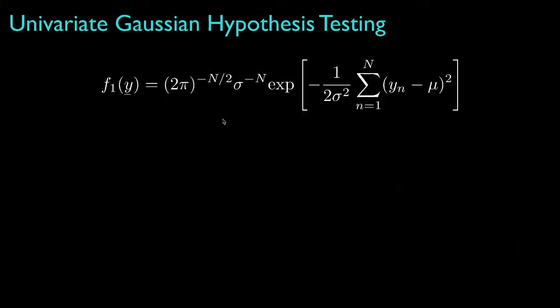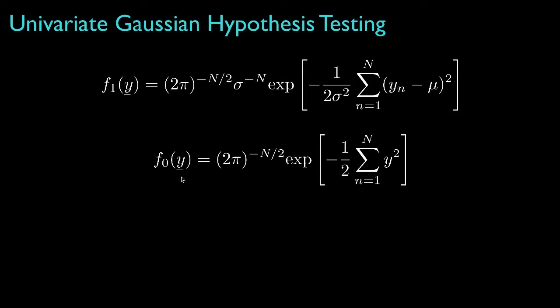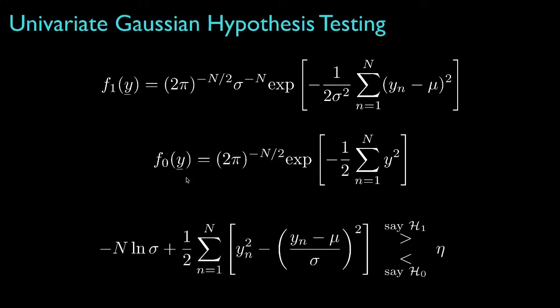Accordingly, the probability density for the observations under hypothesis 1 is the product of N densities with mean mu and standard deviation sigma, and the density under hypothesis 0 is the product of N standard normal distributions. Using those densities, the log likelihood ratio test would look like this, where the decision threshold eta might be defined by the Bayes costs and priors, or could be selected to specify a particular false alarm or detection probability.